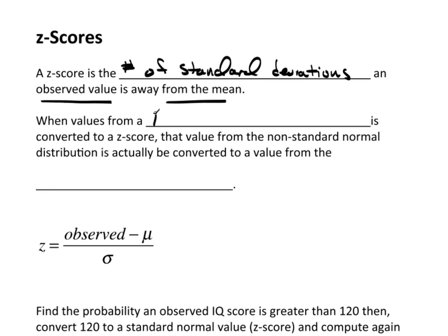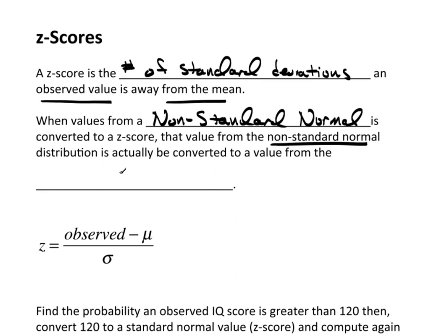When values from a non-standard normal distribution are converted to a z-score, that value of the non-standard becomes actually a member of the standard normal. This z-score process is actually really nothing more than a rescaling. So if I take an observed value, subtract from it the mean of the distribution it came from, and divide by the standard deviation, that is the number of standard deviations.